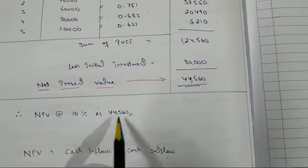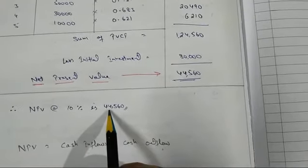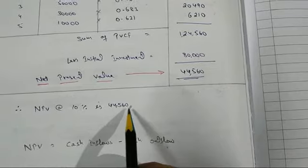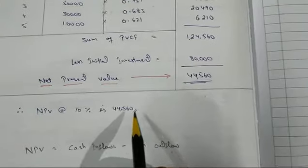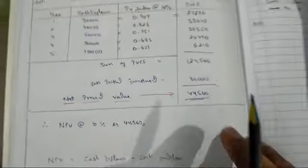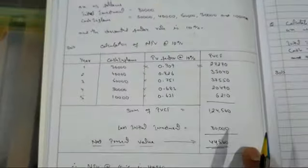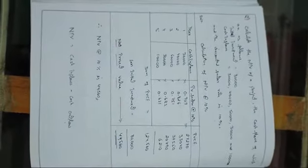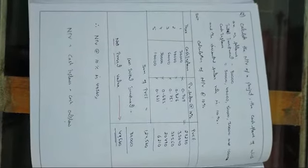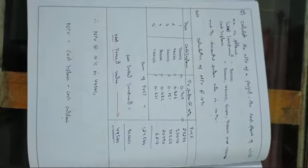Therefore, NPV at 10 percent is 44,560 rupees. I hope and believe that you people have understood this in a good way. Thank you very much.